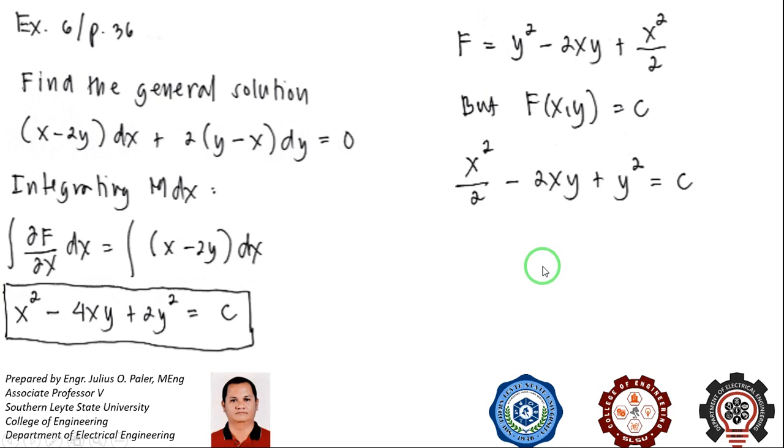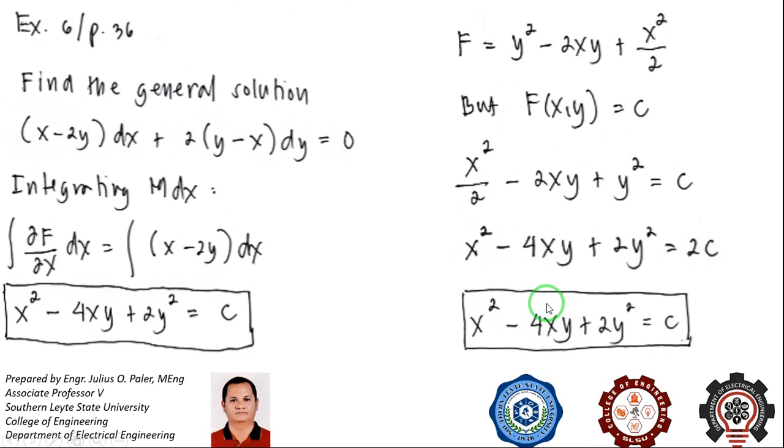Then we'll have X squared minus 4XY plus 2Y squared equal to 2C. But 2C is just equal to C, then our final answer will be X squared minus 4XY plus 2Y squared equal to C.